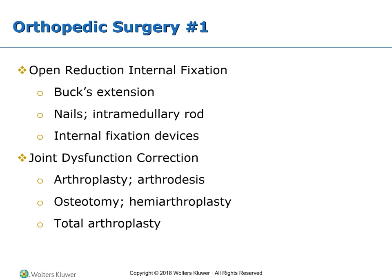Surgical procedures to correct joint dysfunction may be done to minimize or correct joint dysfunction. Clients with arthritis, trauma, hip fracture, or congenital deformity may have an arthroplasty or reconstruction of the joint. This procedure uses an artificial joint that restores previously lost function and relieves pain. Reconstructive joint surgery is performed when mobility and quality of life are compromised. The two joints most frequently replaced are the knee and hip. Other joints that may be replaced include the shoulder, ankle, wrist, and finger joints.